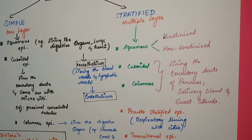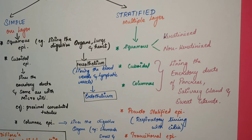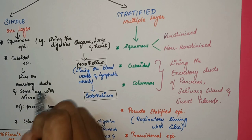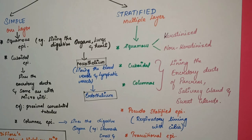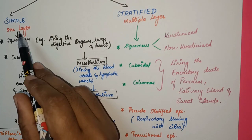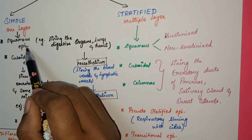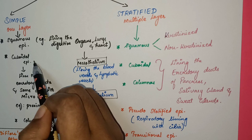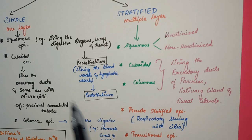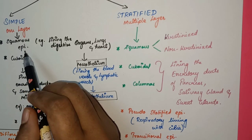Under simple epithelium you have three types: the first is squamous epithelium, the second is cuboidal epithelium, and the third is columnar epithelium.